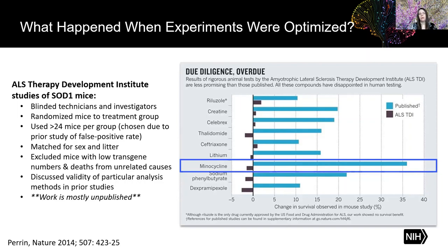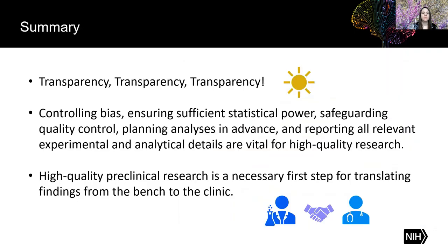This is why we should care about rigorous preclinical research. In summary: transparency — no matter what we do in our experiments, we need to be transparent about it so other people can interpret it correctly. Controlling for bias, ensuring sufficient statistical power, safeguarding quality control, planning analyses in advance, and reporting all relevant experimental and analytical details are vital for high quality research.